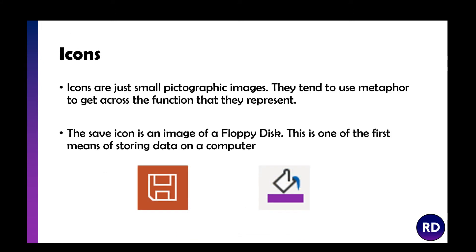Icons are small images that give you an idea of what things are. Think about the save icon — that's a floppy disk, which was one of the first means of storing data. Even though you don't use floppy disks anymore, everyone knows that icon means save. Similarly, the paint bucket tool is a universal symbol for filling a colour, used in Microsoft Paint and all Office applications.